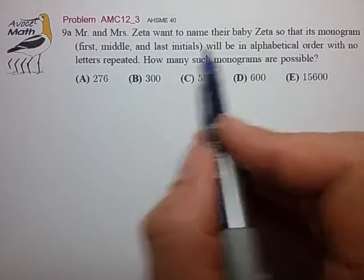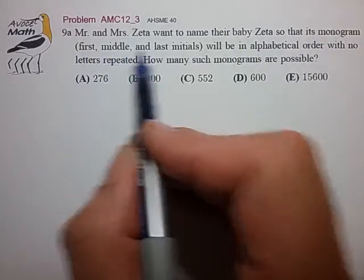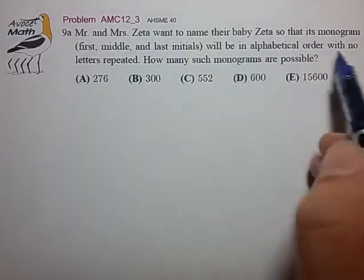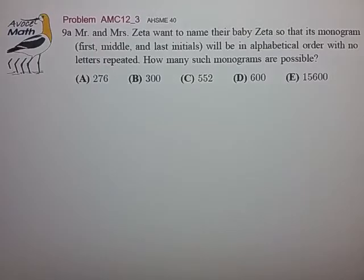Mr. and Mrs. Zeta want to name their baby Zeta so that its monogram, first, middle, and last initials, will be in alphabetical order with no letters repeating. How many such monograms are possible?